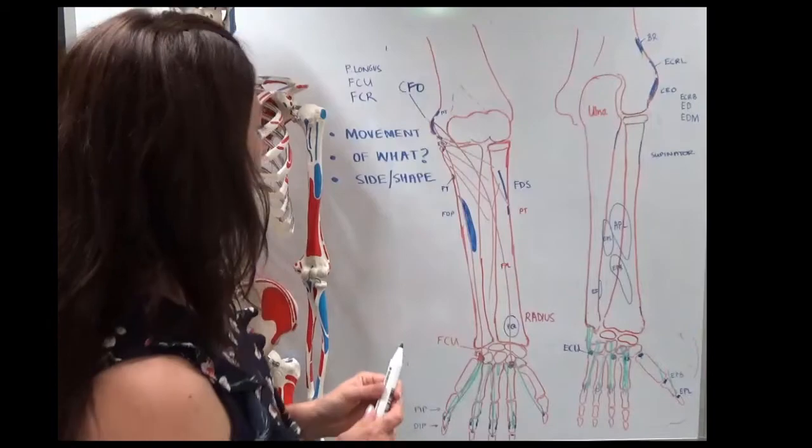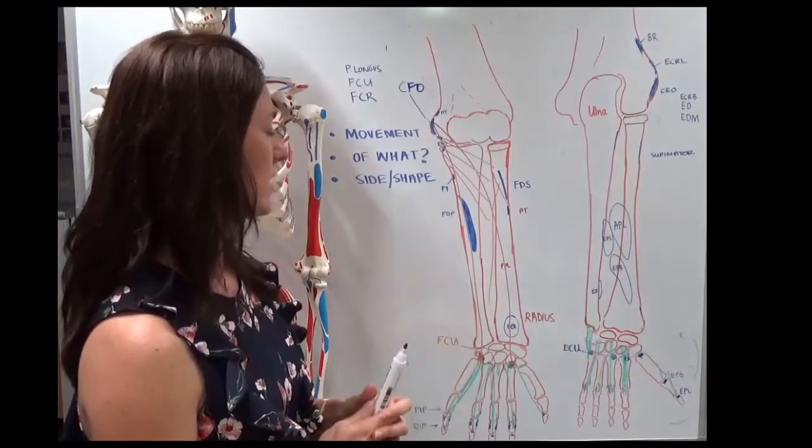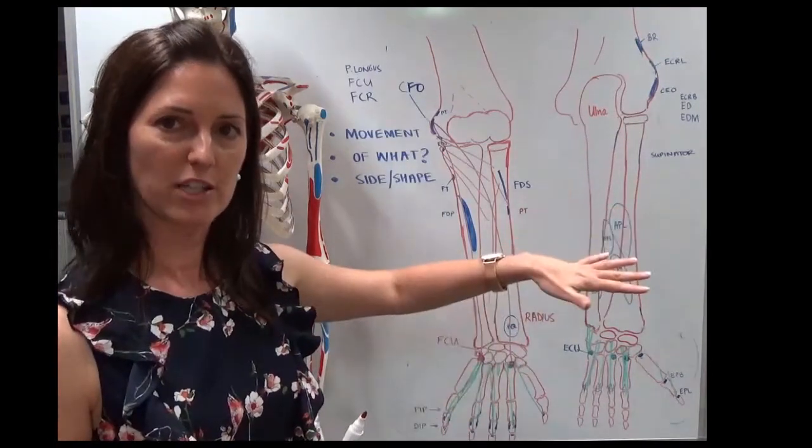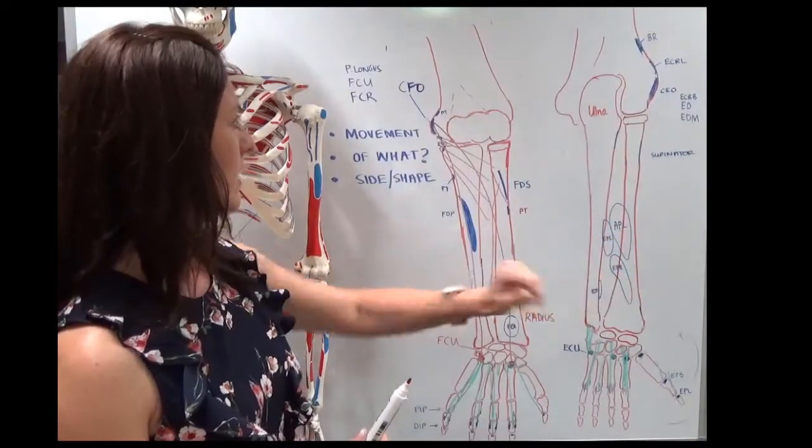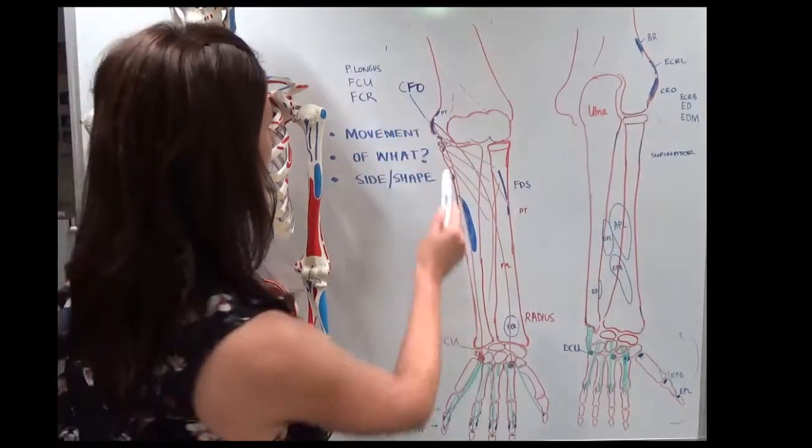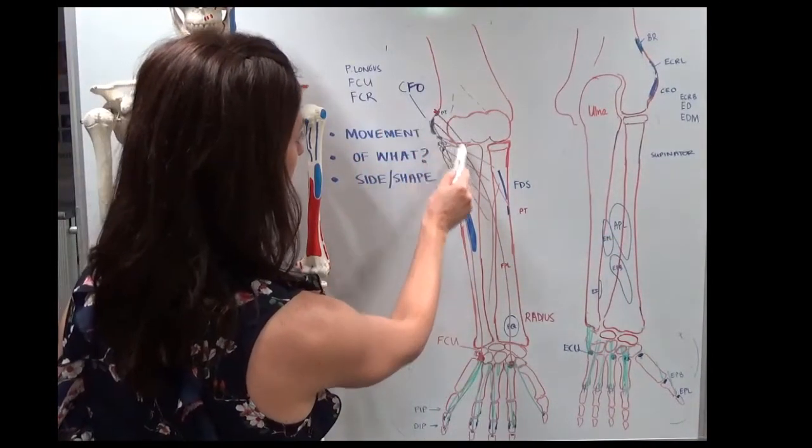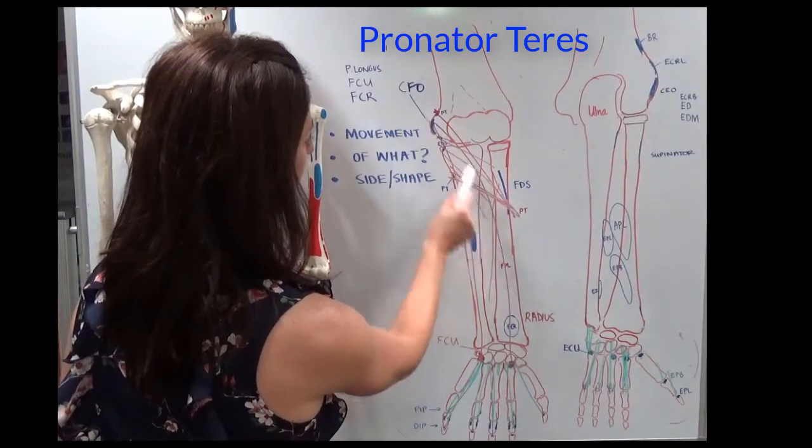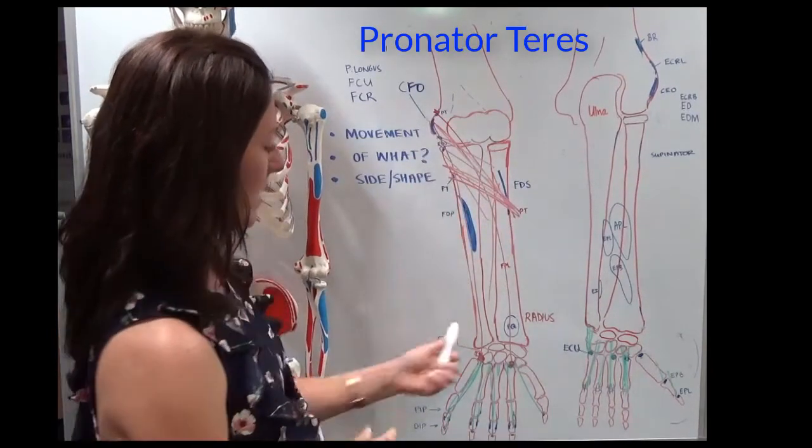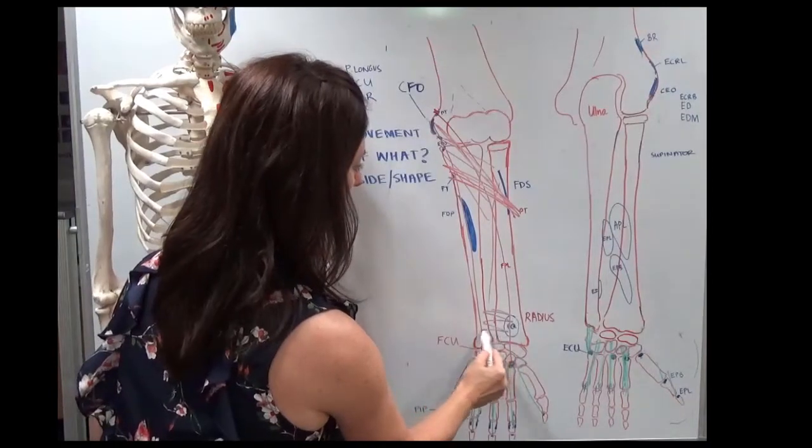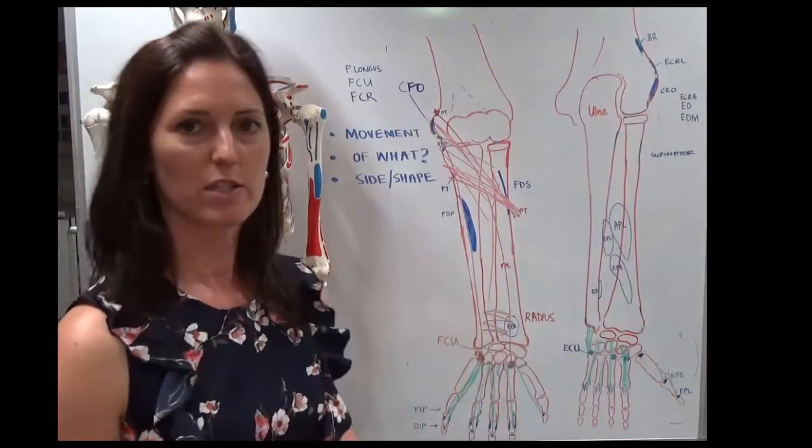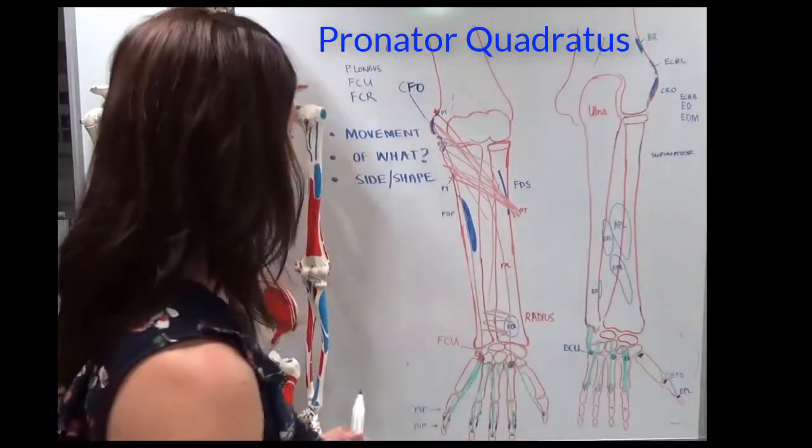Now we've got to talk about another movement that the forearm produces, which is pronation. So pronation, we're going to have two pronators. One that's here, going to here, so pronator teres, and the other one is down the bottom. And that's shaped like a square, so pronator quadratus, nice and easy.